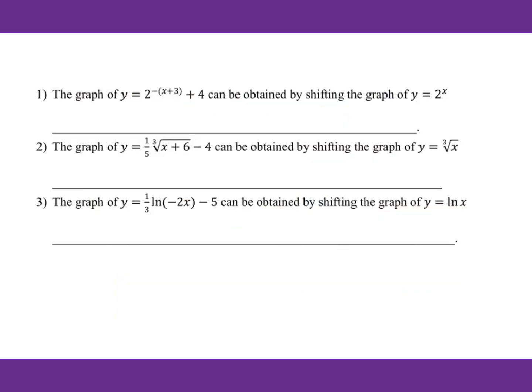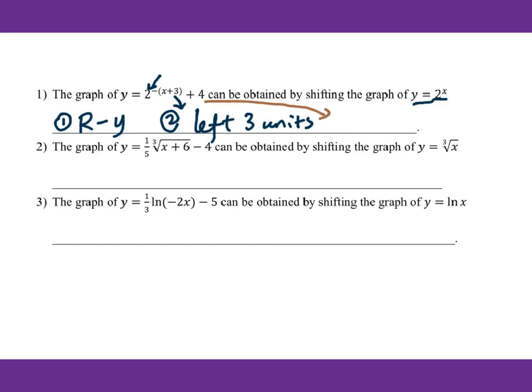Now let's do some examples. For number 1, the graph of y equals 2 to the negative x plus 3 power plus 4 can be obtained by shifting the graph of y equals 2 to the x power. First step: for this negative sign, we reflect across the y-axis. Second step: this 3 is dealing with x — it's a liar — so plus 3 means move to the left 3 units. Then for this 4, that's going up 4 units.